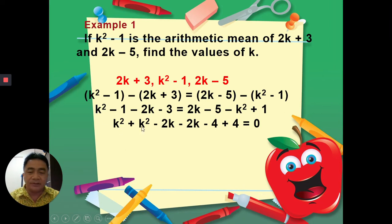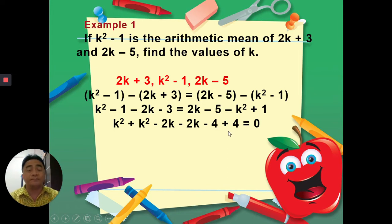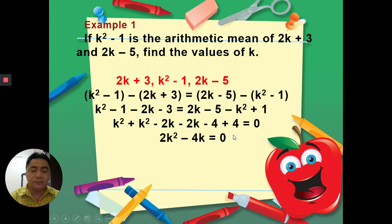Combining like terms: k² and +k² (from transposing −k²) gives 2k². For the k terms: −2k transposed becomes negative, and we combine to get −4k. For the constants: −1 and −3 give −4, and −5 + 1 gives −4; transposing gives +4, so −4 + 4 = 0. The equation simplifies to 2k² − 4k = 0.